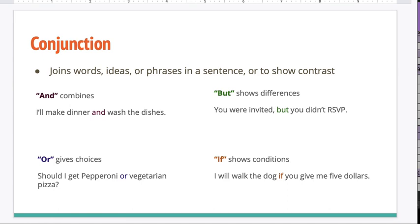And the last part of speech is a conjunction. What is it? Get ready. Yes, conjunction. A conjunction joins words, ideas, or phrases in a sentence or to show contrast. The conjunction and combines: I'll make dinner and wash the dishes. The conjunction but shows differences: you were invited, but you didn't RSVP. The conjunction or gives choices: should I get pepperoni or vegetarian pizza? And the conjunction if shows conditions: I will walk the dog if you give me $5.